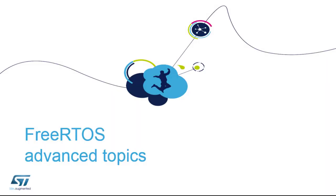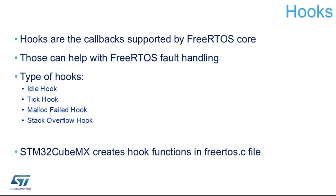Let's continue and jump on something more interesting and detailed — the advanced topics for FreeRTOS and how to make the code more robust and more responsive to different types of errors. One very important part of the FreeRTOS architecture is the hooks. Hooks are methods that are called when something specific happens: a task switch, a memory allocation failure, a stack overflow, and others.